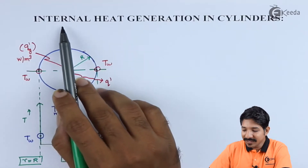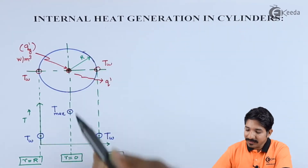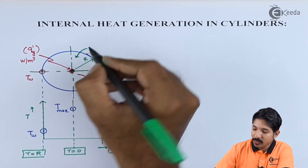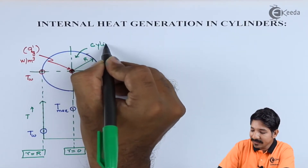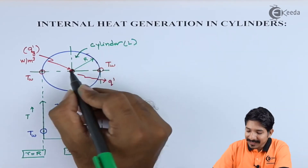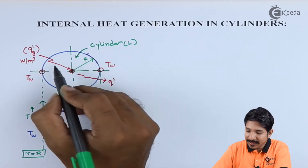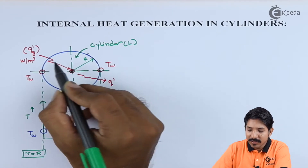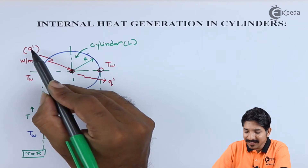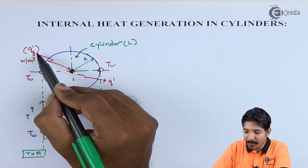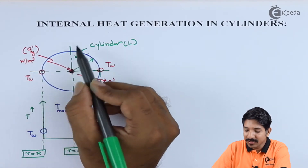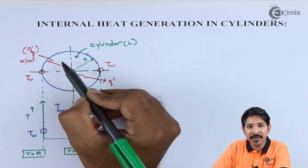Here we have considered internal heat generation in cylinders. Let's consider a cylinder whose radius is capital R and length is L. The wall temperature is T_W, and at the center there is heat generation taking place. Q' is the amount of heat that is generated, with units of Watt per meter cube, because heat generation is always considered per unit volume.